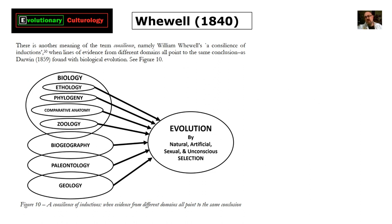William Whewell's sense of consilience — from Elements of Ev Cult — says there's another meaning of the term: a consilience of inductions, when lines of evidence from different domains all point to the same conclusion, as Darwin found with biological evolution. All those different domains — biology, ethology, phylogeny, comparative anatomy, zoology, biogeography, paleontology, and geology — all showed how evolution works by natural, artificial, sexual, and unconscious selection.